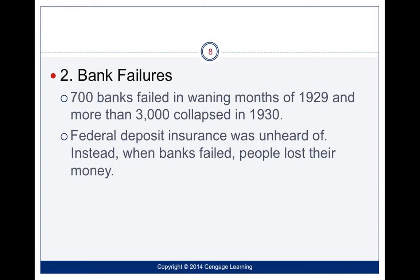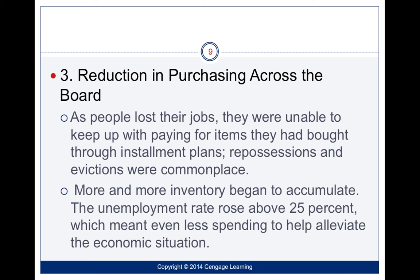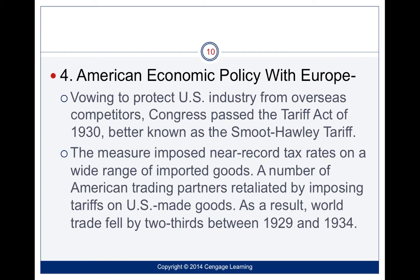When you don't have money and you don't have a job, you can't buy things — that has a trickle-down effect. We had repossessions and evictions. The unemployment rate rose to above 25%. By comparison, our pre-pandemic unemployment rate was about 4% — roughly six times what we had pre-coronavirus. This also had a ripple effect throughout the world, and trade fell by two-thirds between 1929 and 1934.